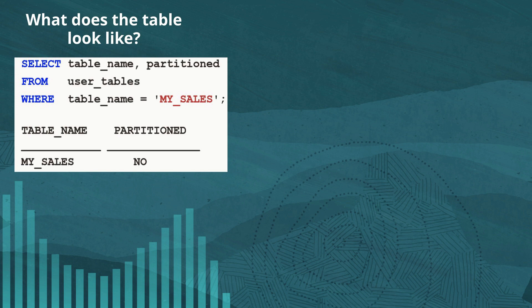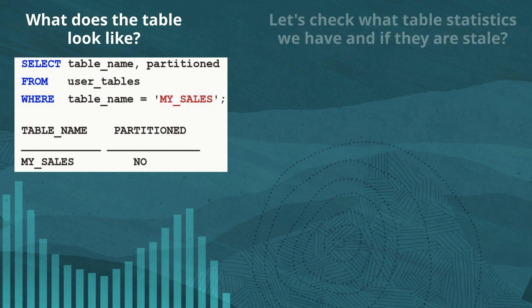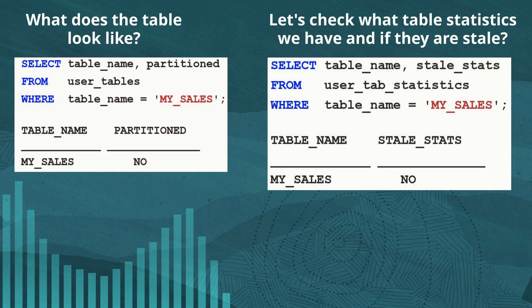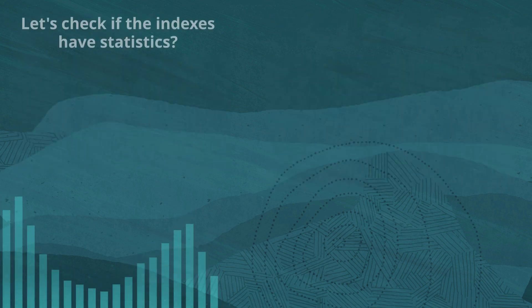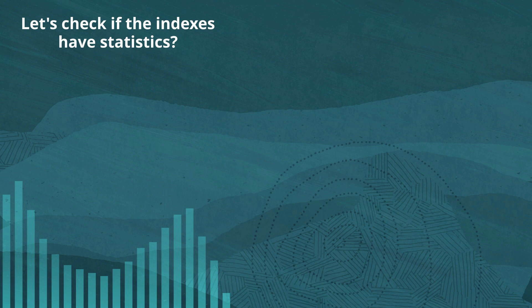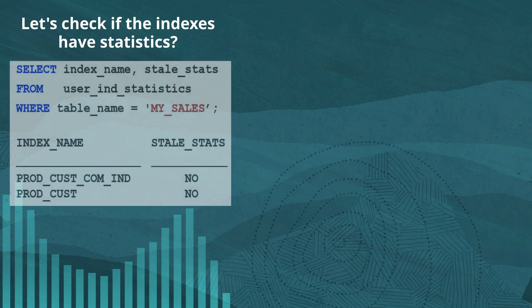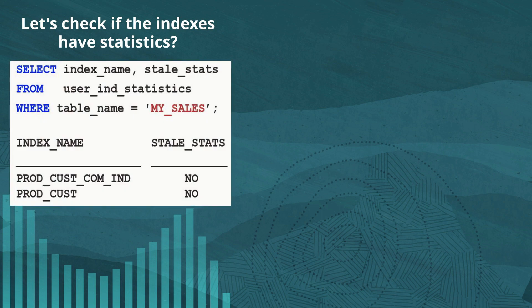But when we look at the data dictionary, we find that it's not. A quick check of the statistics for my sales indicates that there are no stale statistics, so we should be good there. Let's now check the index stats. Both indexes also have stale stats marked as no, so we should have reasonable statistics.